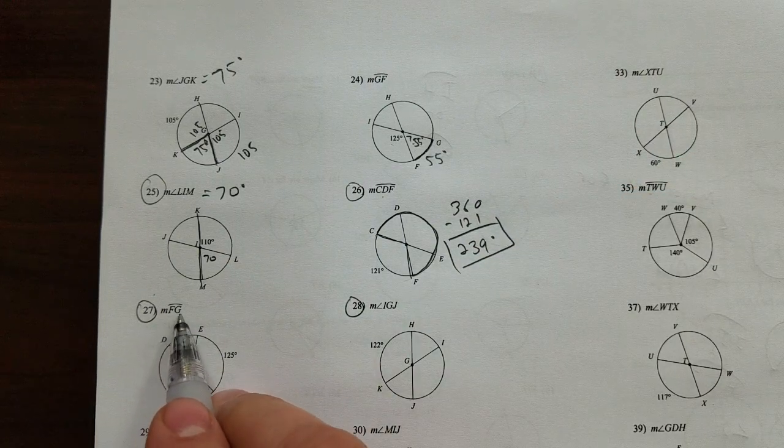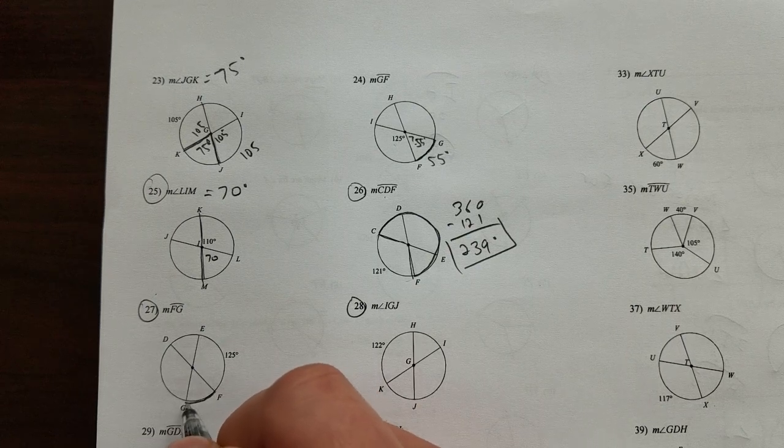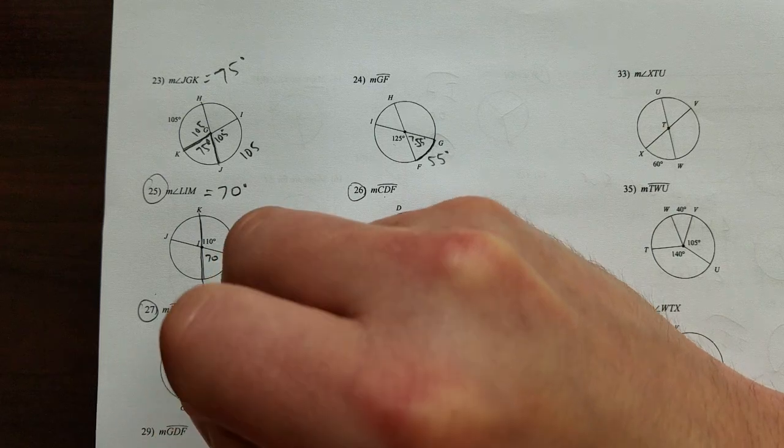This one says measure of FG. It's a minor arc, FG. Well, it is the rest of this half circle,